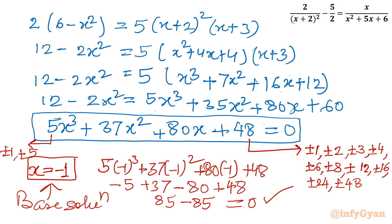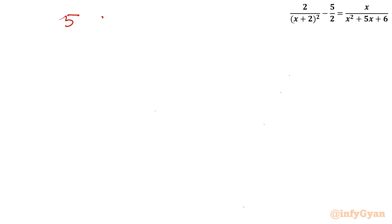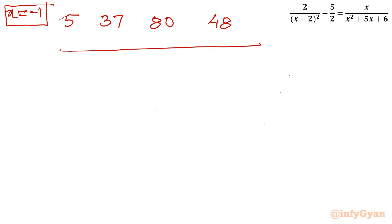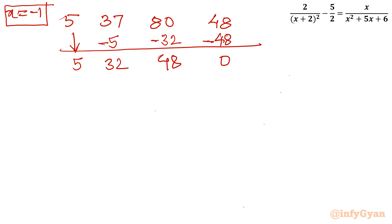Now I will use synthetic division. Writing all coefficients: 5, 37, 80, and 48, with base solution x = -1. Bringing down 5; 5 times -1 is -5; 37 minus 5 is 32; 32 times -1 is -32; 48 minus 32 is... taking the product -32 gives 48; 48 times -1 is -48, so the remainder is 0. The resulting quadratic is 5x² plus 32x plus 48 equals 0.